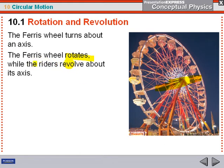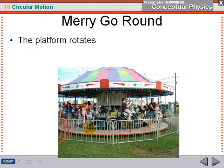The riders revolve because they are outside the axis. The riders are not inside the axis, so they revolve around the axis of the Ferris wheel.